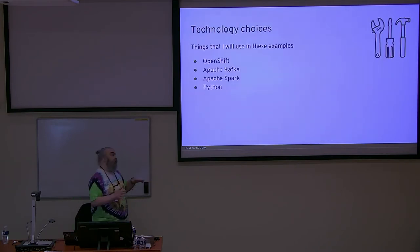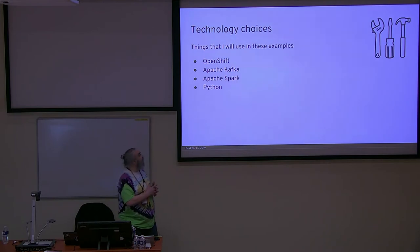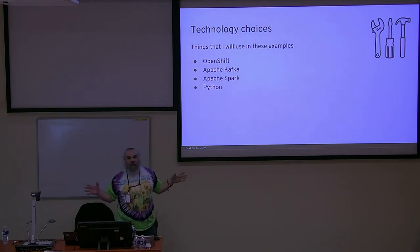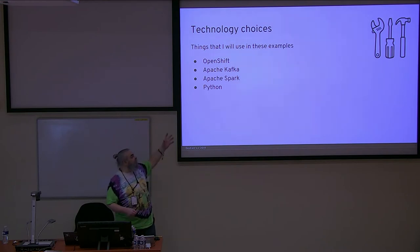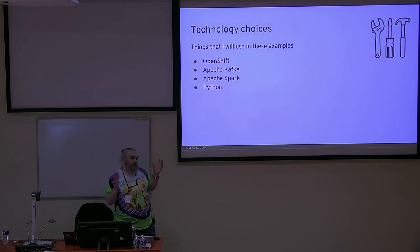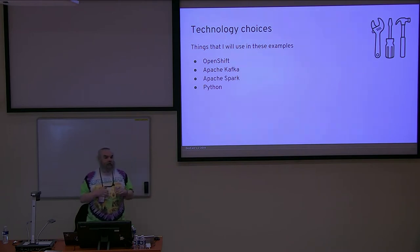We're using OpenShift as our platform because that's the developer platform we like to use. We're using Kafka as our message broker and Apache Spark as our compute cluster. Spark gives us a very easy way to generalize operations across a distributed cluster of machines, in a containerized way to really leverage the power of Kubernetes for scale-out potential across an abstracted hardware layer. I'm using Python for all the samples here because I really like Python and it's easy.